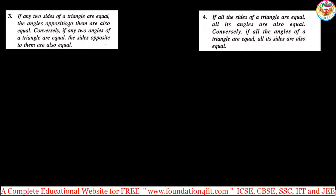The third property: if any two sides of a triangle are equal, the angles opposite to them are also equal. Conversely, the fourth property: if two angles of a triangle are equal, the sides opposite to them are also equal.